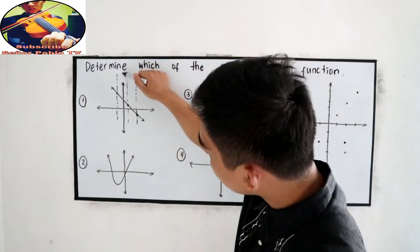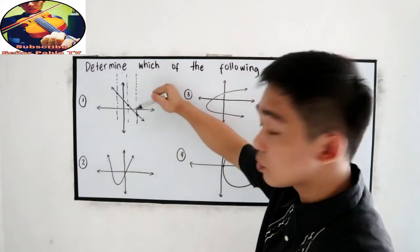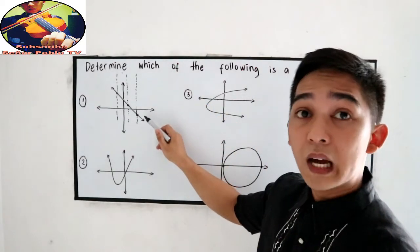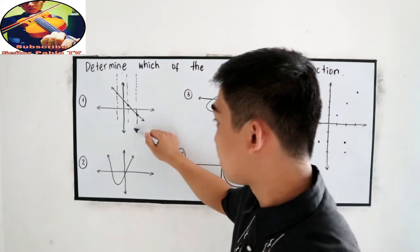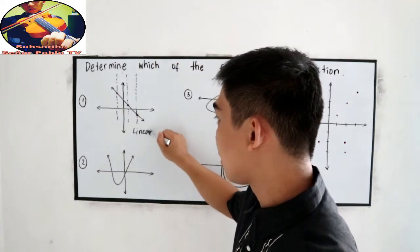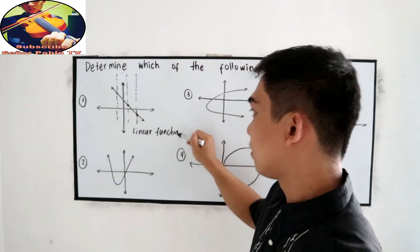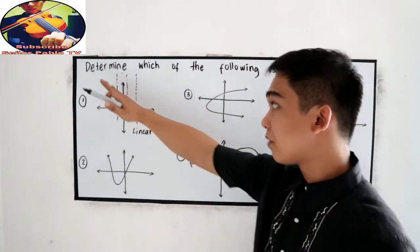Now we can also check the other points because a line is composed of infinitely many points. So here, this is what we call the linear function. The graph of a linear function is a straight line.